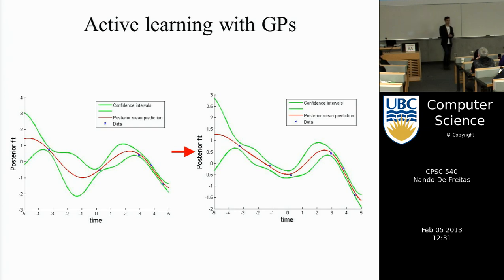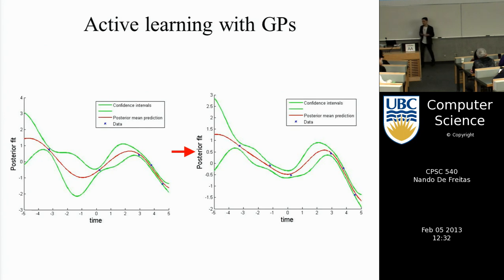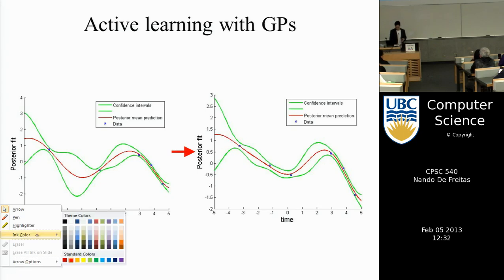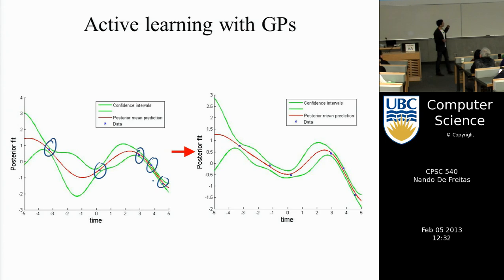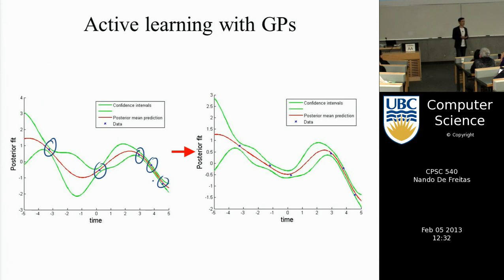Doing predictions on a test set simply amounted to conditioning. A very basic operation of Gaussians is all you need in order to do nonlinear regression. So if you have just a few data points — in this case only five — despite very little data, we're able to come up with a fit that seems very plausible. Not only do we get a nonlinear fit, but we also get good confidence intervals for that dataset.